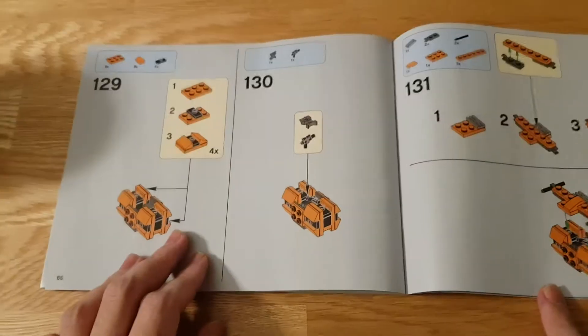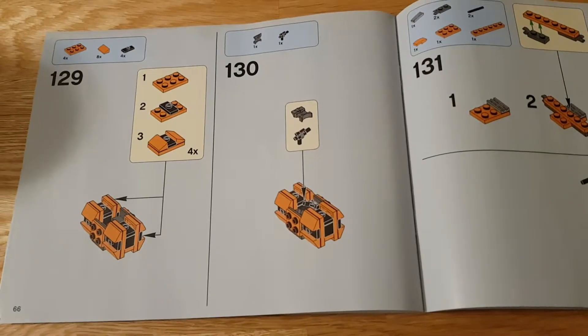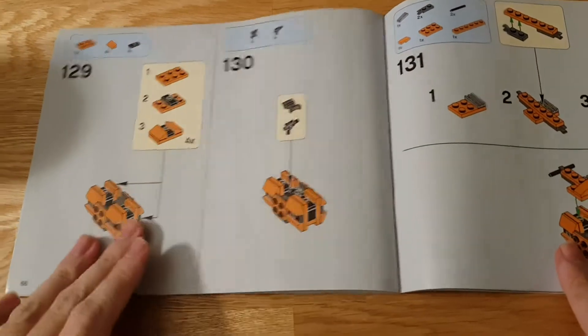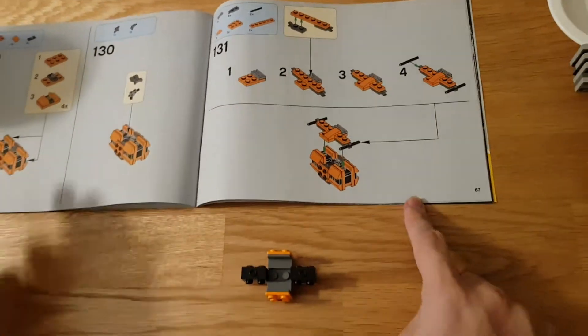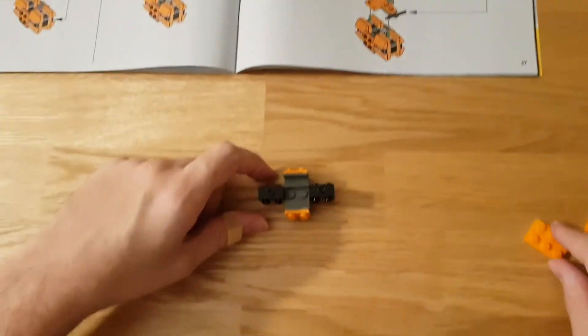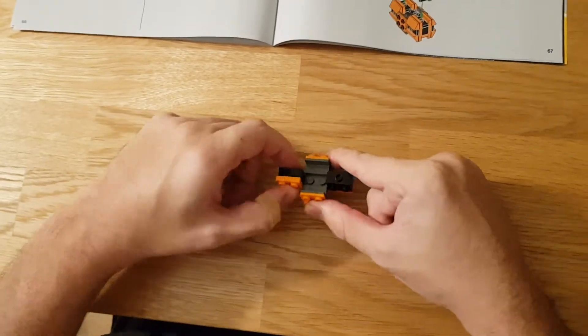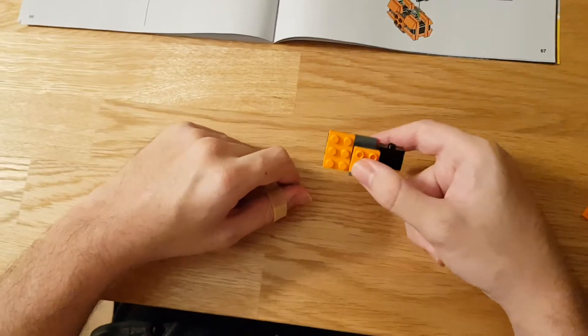And this is the chest. Now the next page. Sorry, the camera gets unfocused sometimes. Anyway, these are the pages. Then we show the next one, which is the last part of the chest. So we need to put flat orange pieces like this.